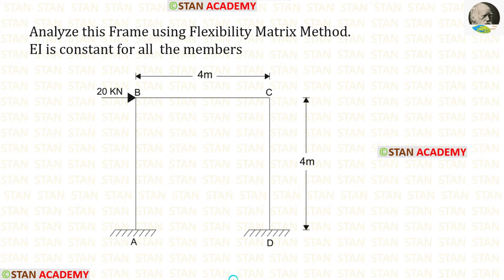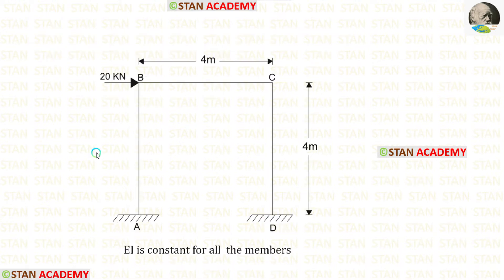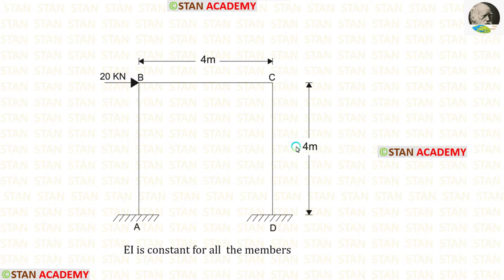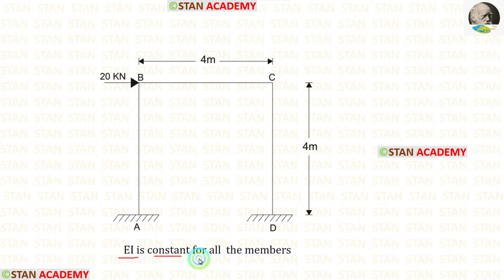Hello everyone. Today we are going to analyze this frame using the flexibility matrix method. Before analyzing, let us see the frame. In this frame, there are two columns — column AB and column CD. There is also a beam BC. At point B, there is a nodal point load of 20 kN acting towards the right side. The height of the columns is 4 meters, and the length of the beam is also 4 meters. The flexural rigidity EI is given as constant for all members.